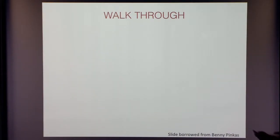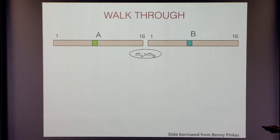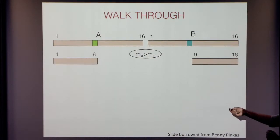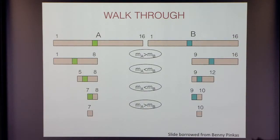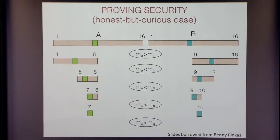Let me walk through how this works and also answer Dan Boneh's question. Alice and Bob have their set of inputs. At each iteration, they locally compute their median, they compare, and depending on the output, they prune. If MA is greater than MB, then Alice prunes the bottom half and Bob prunes the top half. This goes iteratively until they are left with just one element, and then they can find out what the median is. Is this actually secure? What is being securely computed is just the comparison, but is the overall protocol secure? I'll show the security in the semi-honest case and talk about the malicious case a little later.